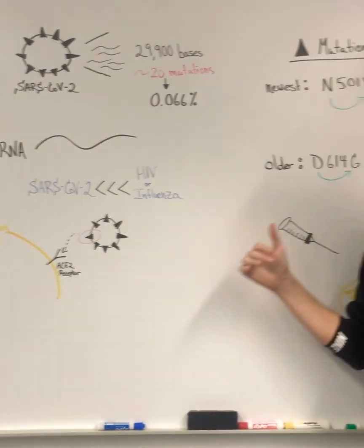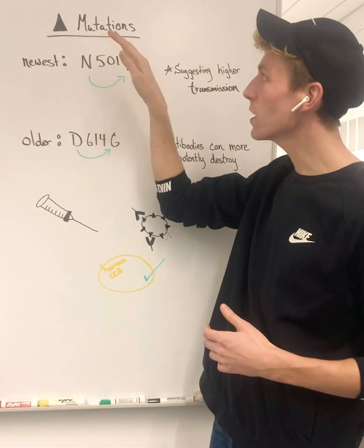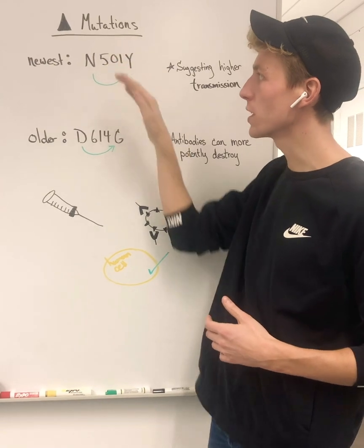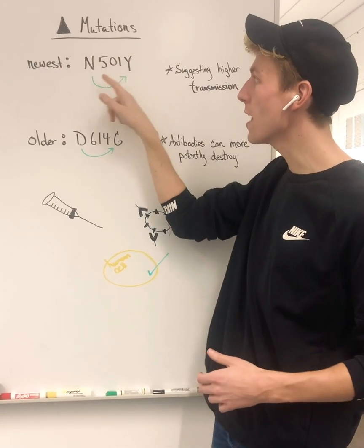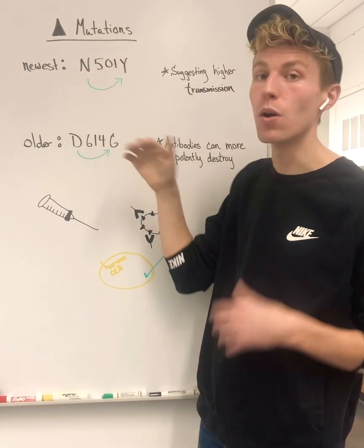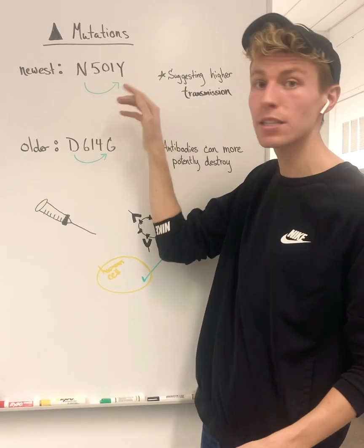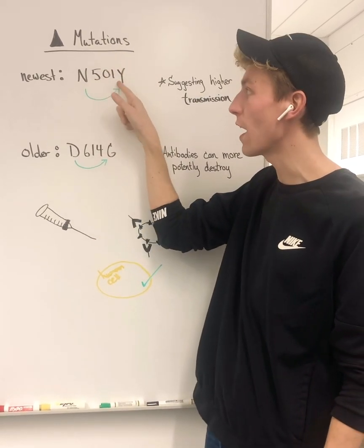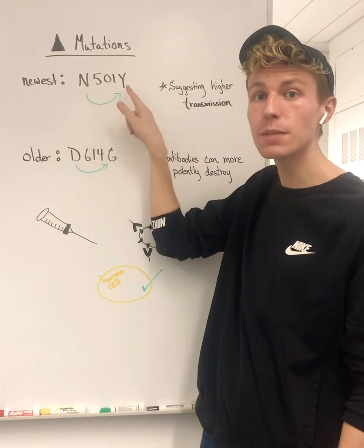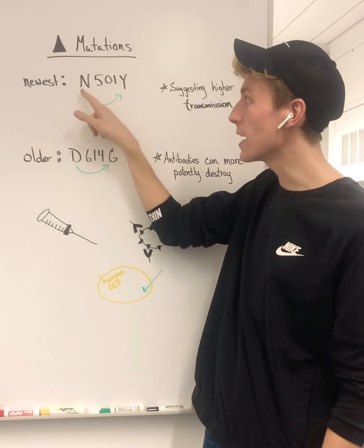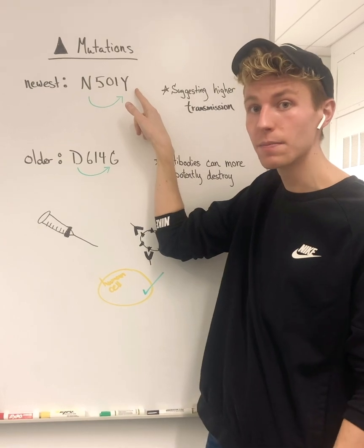But if we look at these mutations in a bit more depth, specific mutations on the spike protein of the newest type are known as N501Y. What this means is on the instructions to make the spike protein at position 501, one amino acid has been changed to another — in this case, asparagine has been changed to tyrosine.